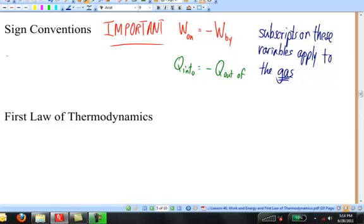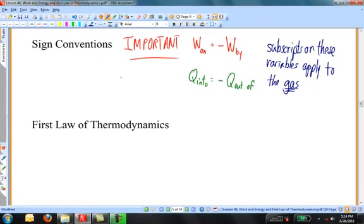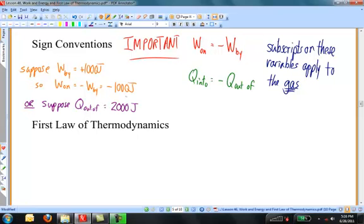So, let's suppose that you're solving an example problem, and you find the work that's done by the gas is equal to positive 1,000 joules. Later on in the same problem, you'll run across the variable W_on. What number are you going to use for that? Well, if you know that W_by is equal to positive 1,000, then you can write that W_on is equal to negative 1,000. Or let's suppose you're solving a problem, and you find that the amount of heat that flows out of the gas is 2,000 joules. Later on in the problem, you may run across a situation in which you need actually the amount of heat that flows into the gas. You'll put a negative sign in front of that number in order to find the amount of heat that actually flows into the gas. In this case, you put a negative sign in front of the number 2,000, and you get negative 2,000 joules.